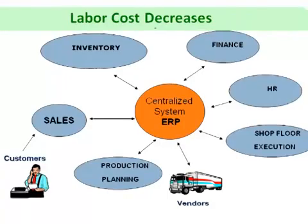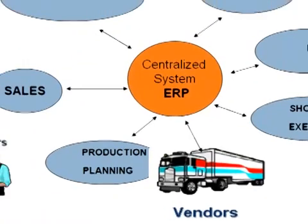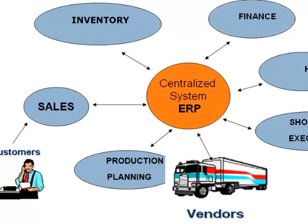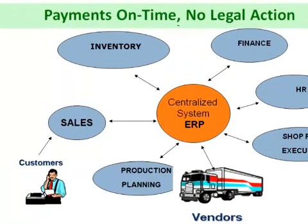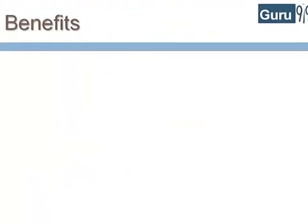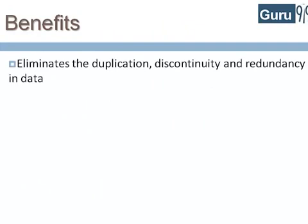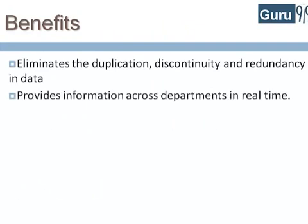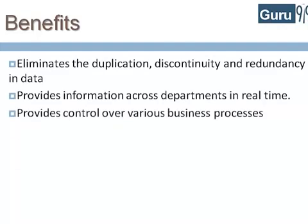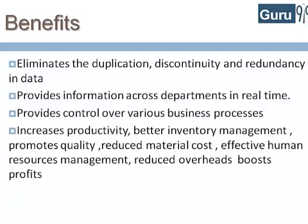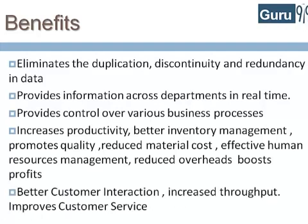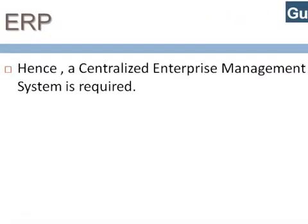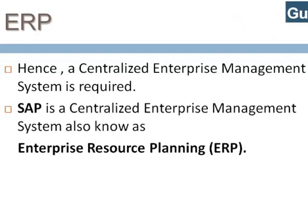Vendors can directly submit their invoices to the centralized enterprise system, which can be accessed by the finance department. Thus, payments are made on time and possible legal actions are avoided. The key benefits of the centralized system are: it eliminates the duplication, discontinuity, and redundancy in data; it provides information across departments in real time; it provides control over various business processes; it increases productivity, provides better inventory management, promotes quality, reduces material cost, allows for effective human resources management, and reduces overhead while boosting profits; better customer interaction, increased throughput, and improved customer service. Hence, a centralized enterprise management system is required. SAP is a centralized enterprise management system, also known as enterprise resource planning.